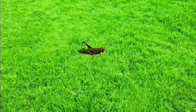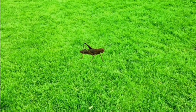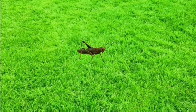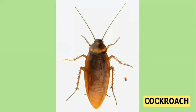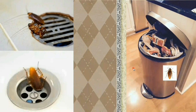Grasshopper hops. It eats grass and hops — that is why it is called a grasshopper. This is a cockroach. Cockroach is an insect. Cockroach has six legs. Cockroaches live in dirty places like sewers and trash cans. They pick up lots of germs and can spread germs wherever they crawl and make us sick. So we have to remove our trash regularly and always keep our home clean.